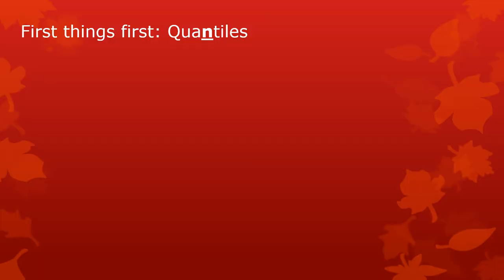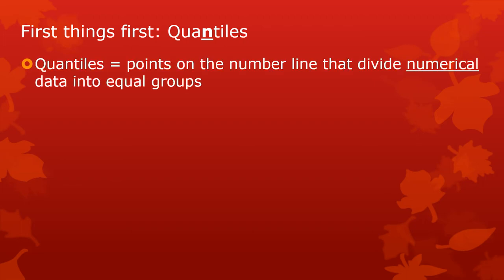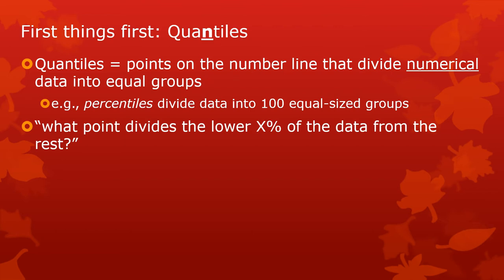First things first, we need to learn what quantiles are. Not quartiles, but quantiles. Quartiles are a kind of quantiles. Quantiles are just the points on the number line that divide numerical data into equal groups. Percentiles are just the points on the number line that divide the data into 100 groups. So you can say what point divides the lower whatever percent of the data from the rest of it.